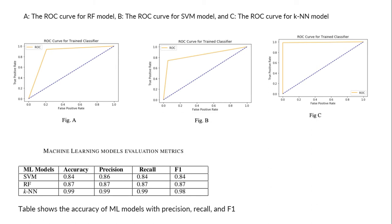Figure A shows the ROC curve for the Random Forest model. Figure B shows the ROC curve for the SVM model. Figure C shows the ROC curve for the KNN model. Table 3 shows the accuracy of the model with precision, recall, and F1 score. Using the KNN model, they were able to achieve an upper detection accuracy of 99.18%.